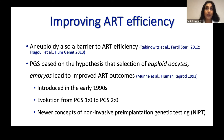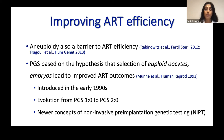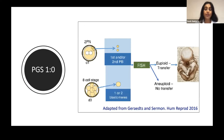Aneuploidy is also a barrier to the efficiency of ART. We always have this barrier that we cannot enhance outcomes or success rates beyond a certain limit. One of those barriers is aneuploidy. PGS is based on the hypothesis that selection of euploid embryos leads to improved ART and IVF outcomes. It was first introduced in the early 1990s, and has evolved from first generation PGS to second generation PGS, and now we have newer concepts of non-invasive pre-implantation genetic testing.